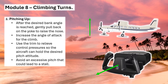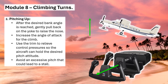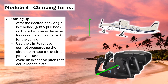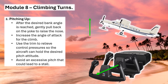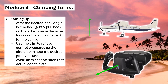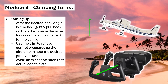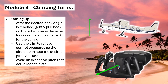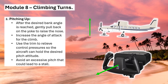2. Pitching up – after the desired bank angle is reached, gently pull back on the yoke to raise the nose. Increase the angle of attack for the climb. Use the trim to relieve control pressures so the aircraft can hold the desired pitch attitude. Avoid an excessive pitch that could lead to a stall.